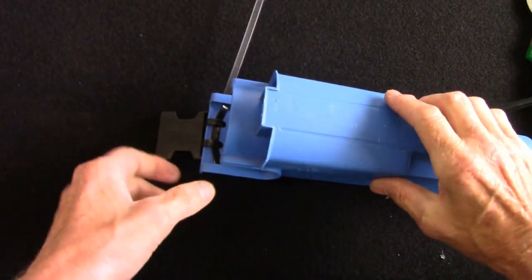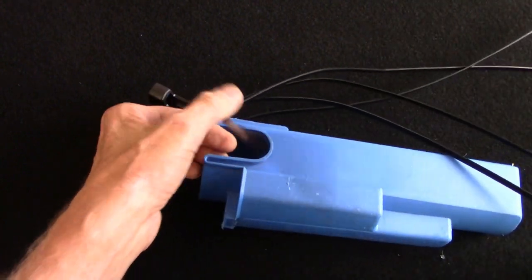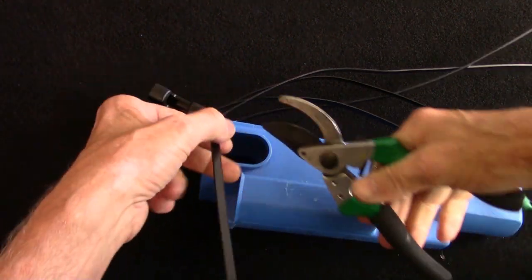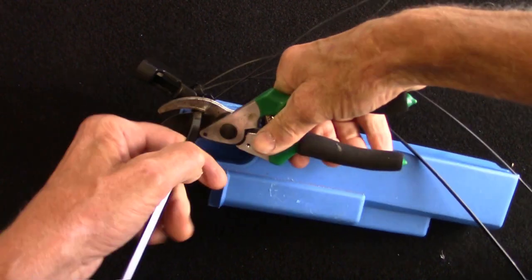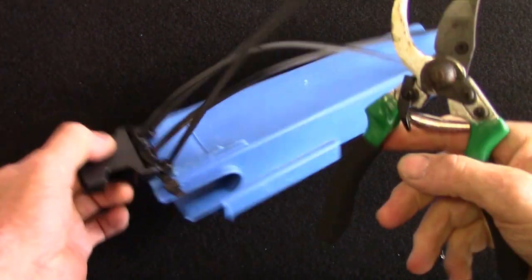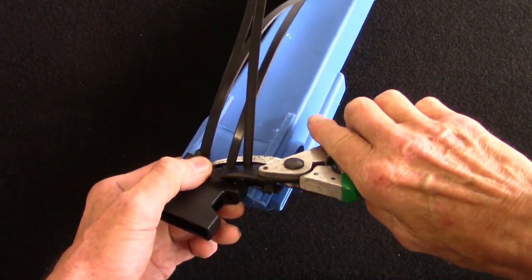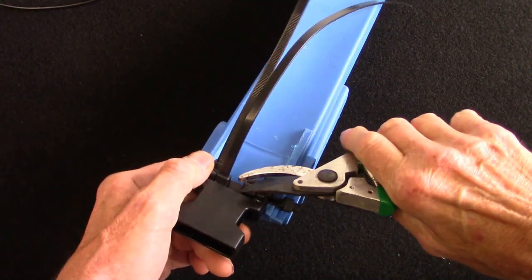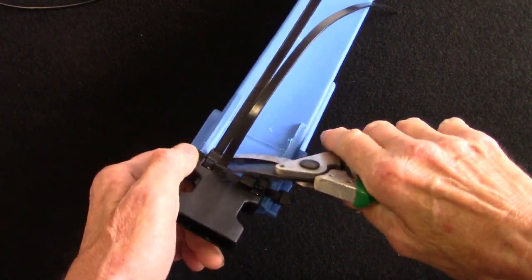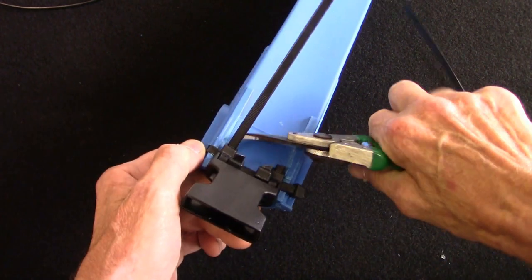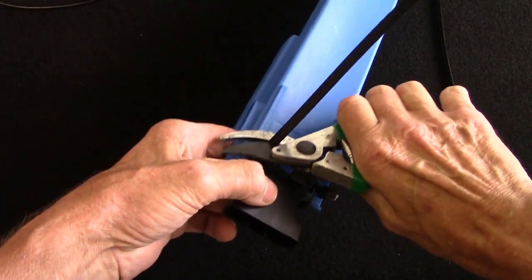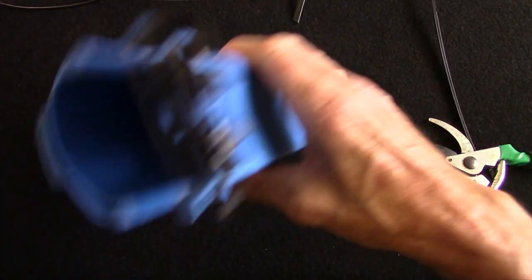So now I'll get the secateurs and we'll trim the cable ties off. With all these, try to trim them as closely as possible. I'm just trimming it up, but try to keep them close as possible because if it's too long it'll dig into your legs when you're wearing the bucket on the belt.